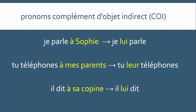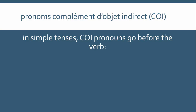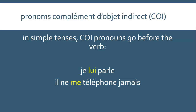You'll notice here we have a change of word order, just like with the direct object pronouns. When the indirect object is a whole noun, it comes after the verb, but when it is a pronoun, it comes before. In simple tenses, indirect object pronouns go before the verb. So we've already seen 'je lui parle,' but we could also say 'il ne me téléphone jamais' — he never calls me. Note that the negative 'ne' comes before the pronoun.